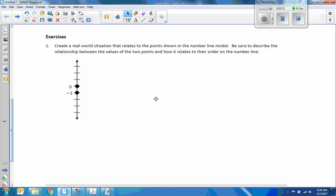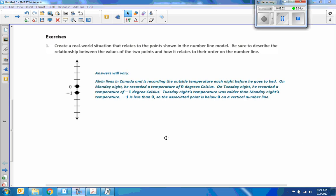Now, exercise point. To create a real-world situation that relates to the point shown in the number line model, be sure to describe the relationship between the values of the two points and how it relates to the order of the number line and what does zero mean here. So, this is a vertical number line. So, I would always consider thinking about temperature, elevation, or something like that for doing a vertical number line. So, try to come up with a story for them. Here's an example. Alvin lives in Canada and is recording the outside temperatures each night before he goes to bed. On Monday night, he recorded a temperature of zero degrees Celsius. On Tuesday night, he recorded a temperature of negative one degrees Celsius. Tuesday night's temperature was colder than Monday night's temperature. Negative one is less than zero. So, the associated point is below zero on a vertical number line.